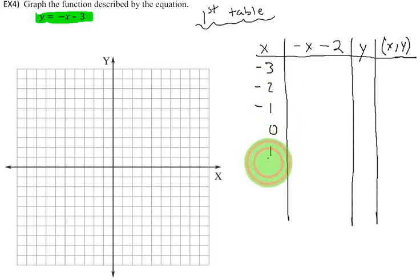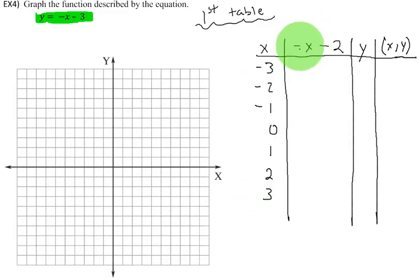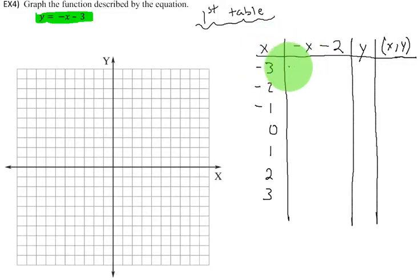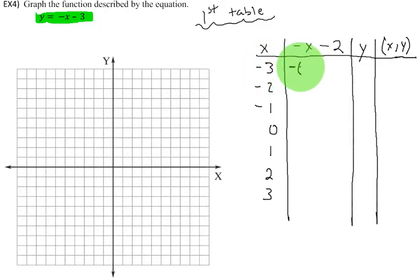So the first thing I want to do is create a table. My x values are going to come first, followed by my equation, negative x minus 2. I'm going to make sure I create just enough space so that we have an ordered pair at the end. Not all your teachers are going to make you create a column for your ordered pair, but I think it's a good habit to get into.